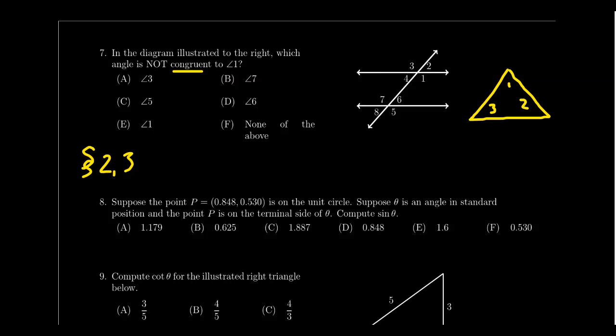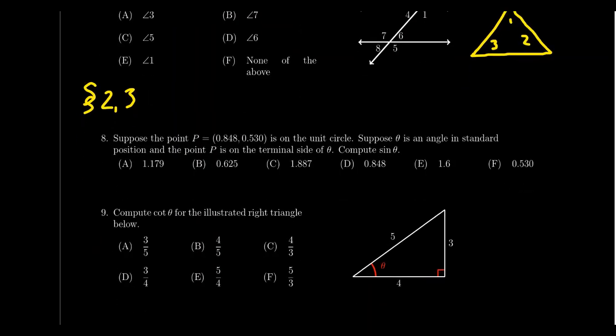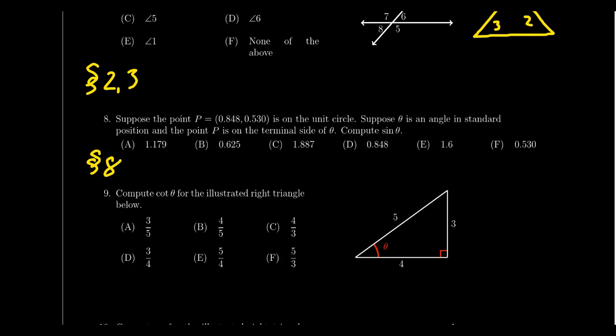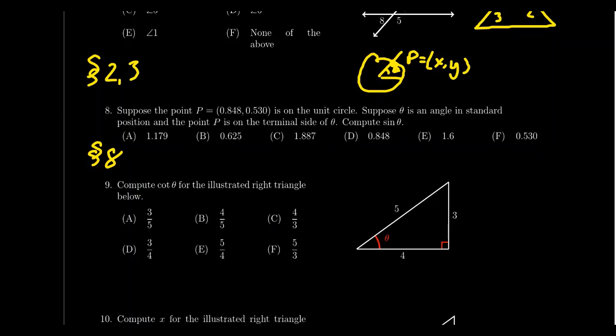Question number eight is about circle trigonometry. When you have the unit circle and a point P = (x, y) on it, the x-coordinate is cosine of angle θ and the y-coordinate is sine of angle θ. The other trig ratios are computed from their usual ratio definitions. You need to understand how trigonometry is defined using points on the unit circle.